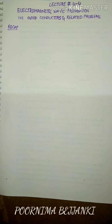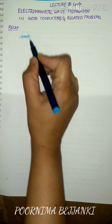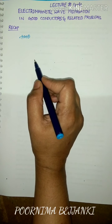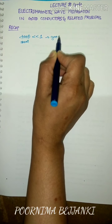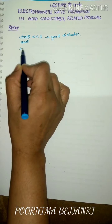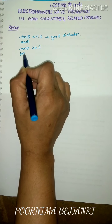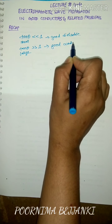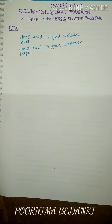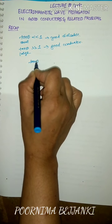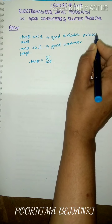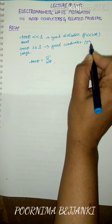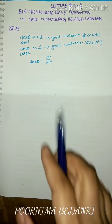Let us revise what we studied in the previous lecture. We defined the quantity tan theta, called the loss tangent, which defines whether a given medium is a good conductor or good dielectric. If loss tangent is very much less than one, the medium is a good dielectric. If loss tangent is very much greater than one, the medium acts like a good conductor. The loss tangent tan theta equals sigma divided by omega epsilon.